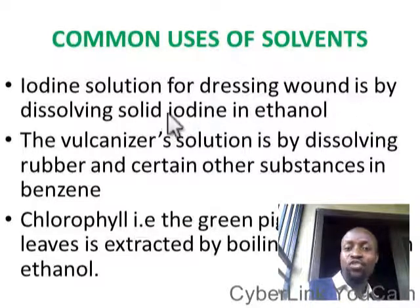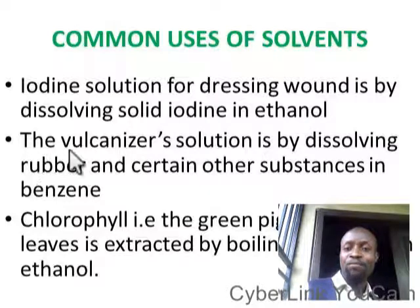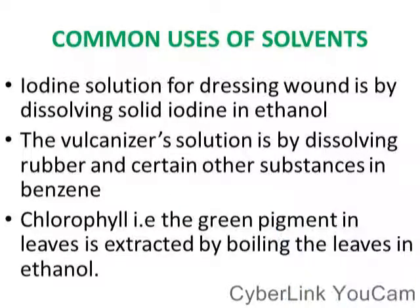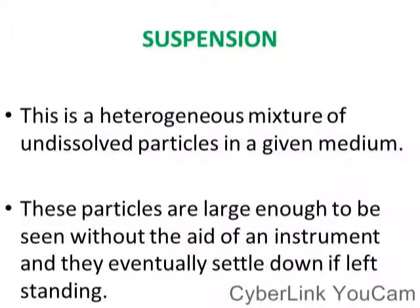Iodine solution is made by dissolving solid iodine in ethanol — so the solute is solid iodine and the solvent is ethanol. Other substances can also be dissolved in benzene. Chlorophyll, which is the green pigment in a leaf, is extracted by boiling the leaf in ethanol — that extraction is a very good one to carry out.